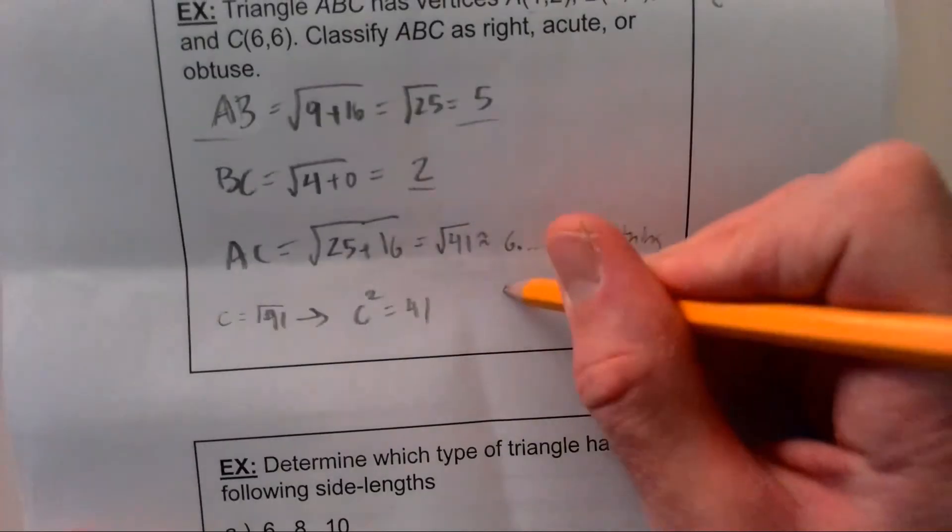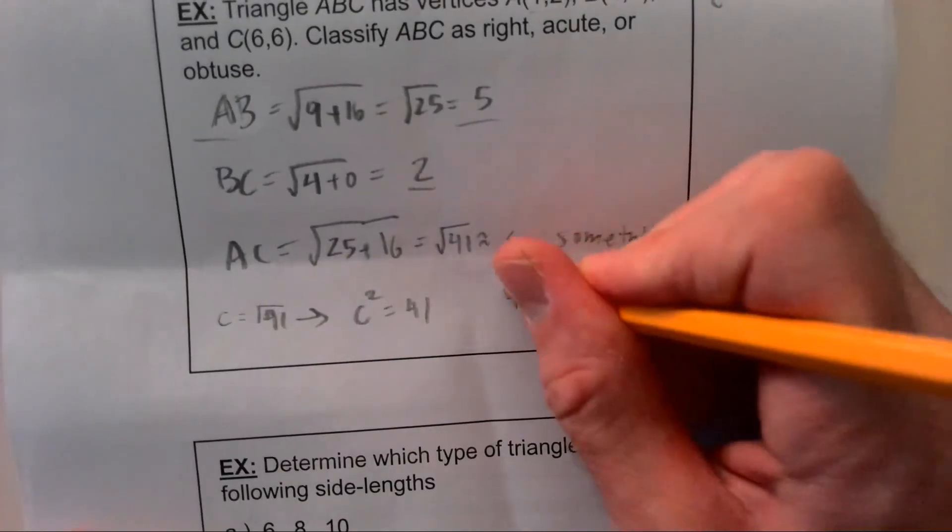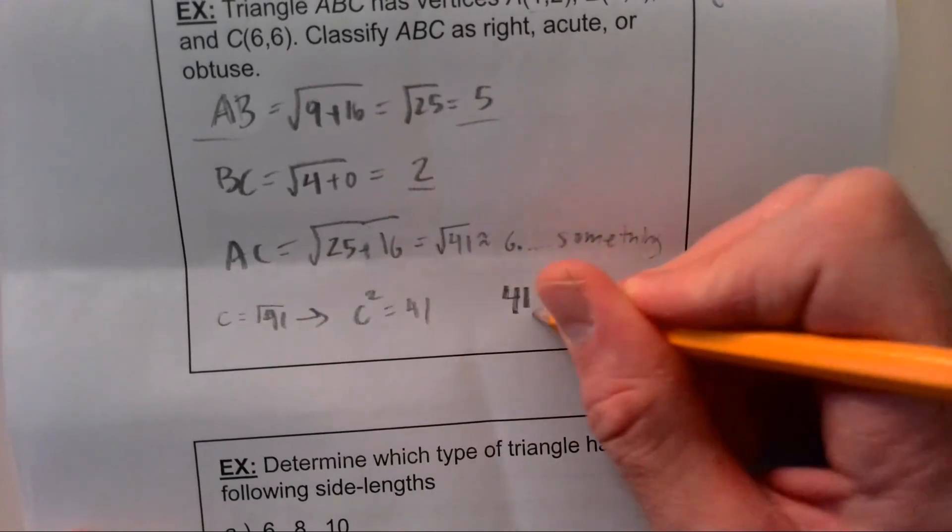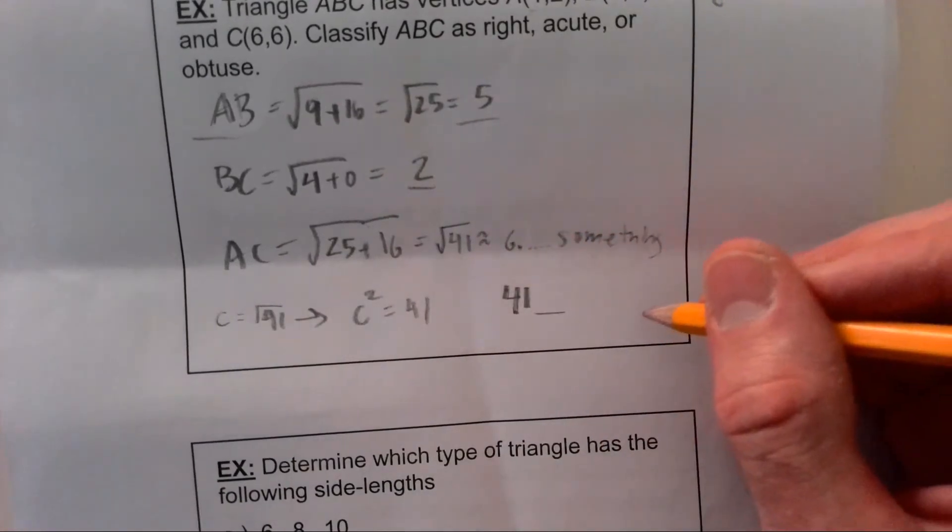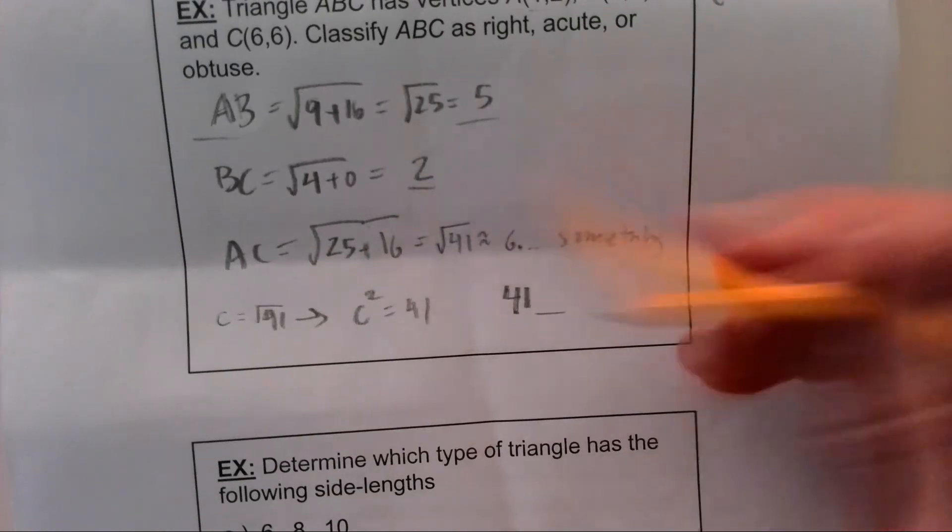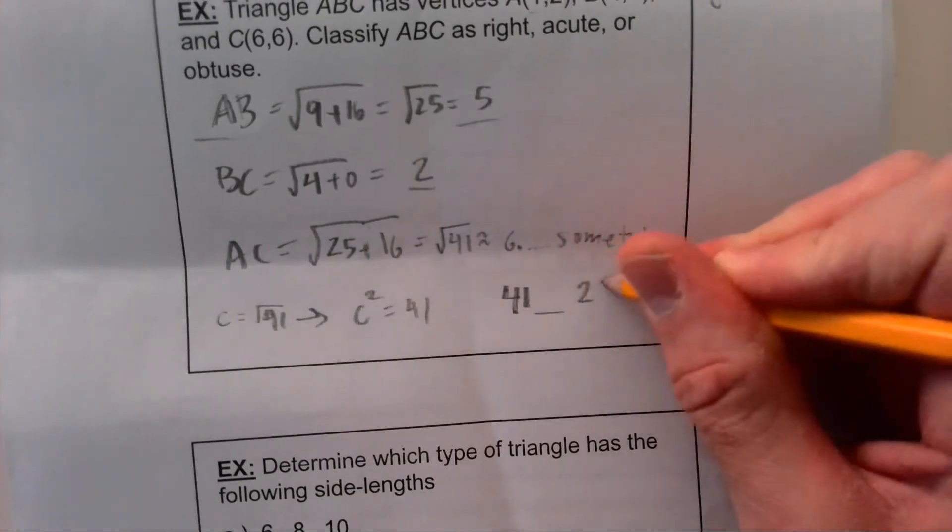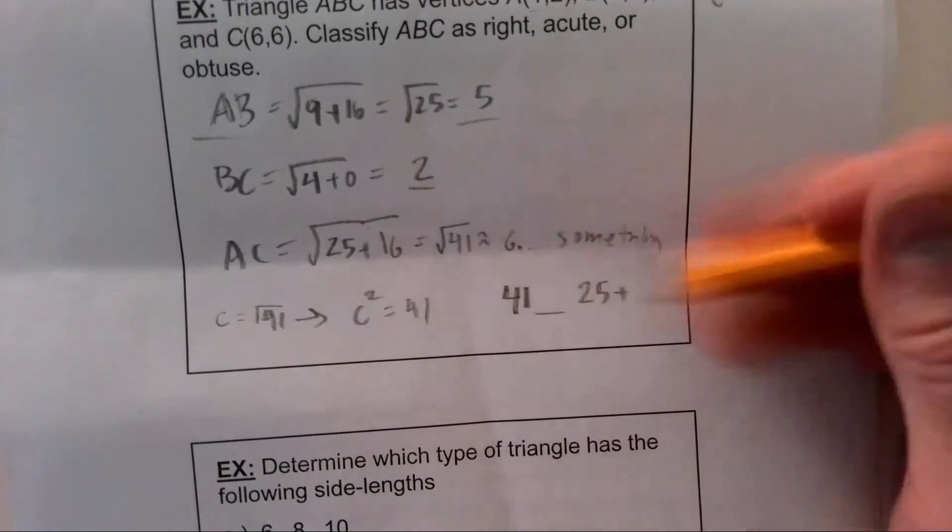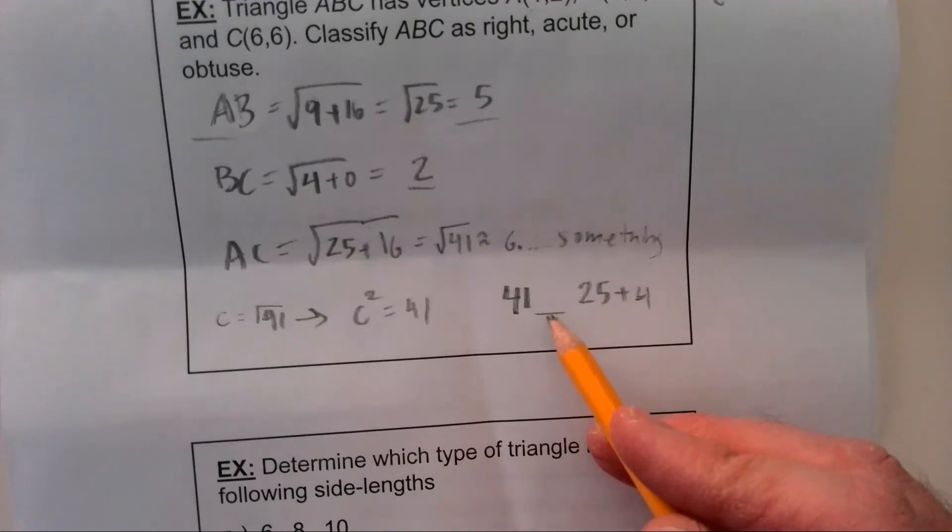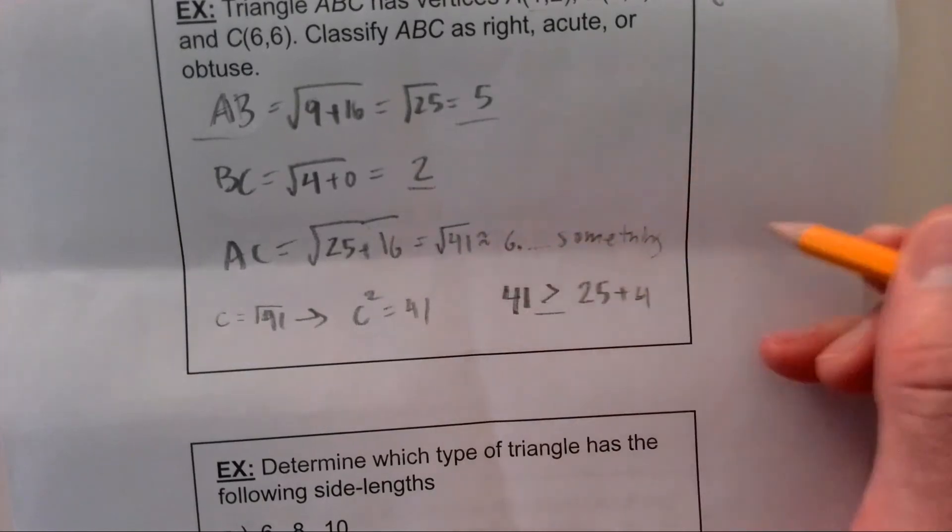Okay, so 41. I need to get a pencil sharpener. One thing I wish I had at home. I'm going to put a blank space here, and then we're going to square each of those: 25 plus 4. Okay, so we want to either fill that in with equals, greater, or less than. When you add those together, that's a 29. That is definitely greater than.